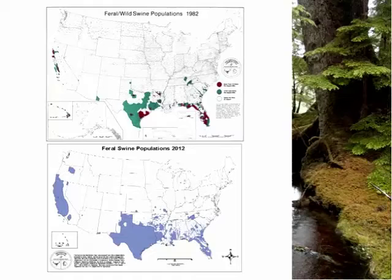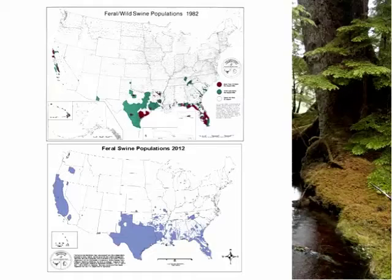Feral pigs are able to cope with cold winters — there are pig populations that do well even in Canada. They are now known to be in about 40 states, Canada, and Mexico. Texas alone is estimated to have about 2.6 million — and it's likely at least that. It's hard to get an accurate count, but Texas is fairly well outlined with pig observations, and it's likely an underestimate.